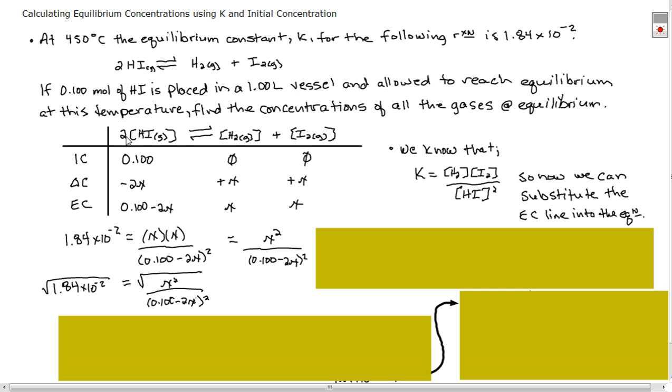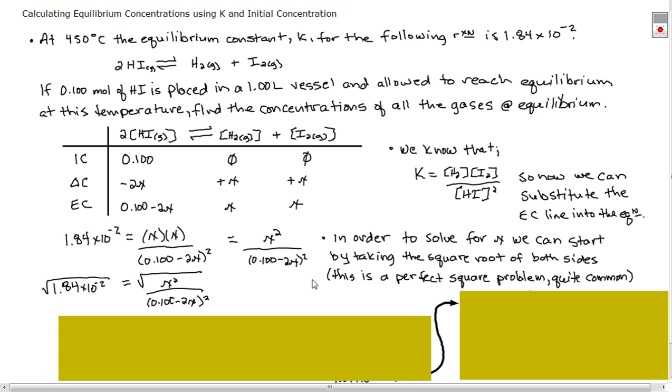So try and follow. Two as a coefficient means that 2 as an exponent in the law expression. That means we need a 2 outside the brackets here. And this is where things get tricky, because now we've got an expression that looks like this: x squared over 0.100 minus 2x squared. This is where a little bit of math trickery comes in. You realize that we've got a perfect square.